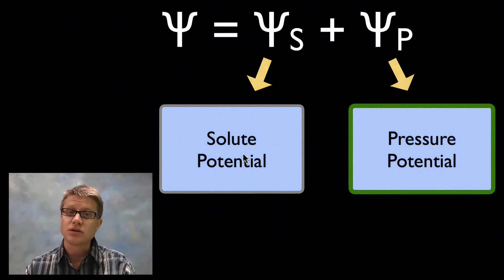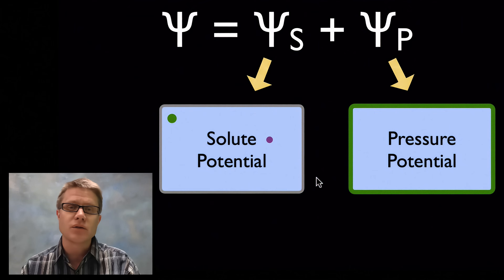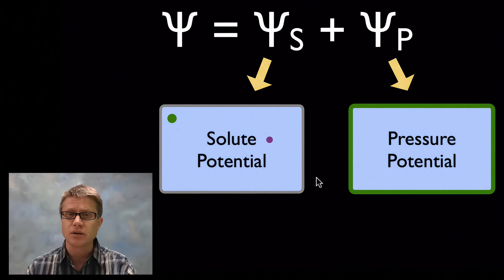Solute potential is going to drop as we increase the number of solutes in that area. If I were to add just two little bits of sodium chloride or salt to it, what would that do to the solute potential? It's going to drop that, it's going to get a lower value. Why is that? Remember we're opening up spaces in here for water, so we're going to have less water.